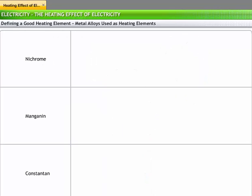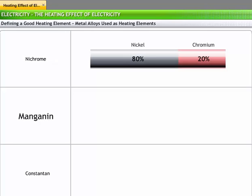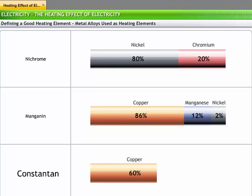Three metal alloys most commonly used as heating elements are Nichrome, an alloy composed of 80% nickel and 20% chromium; Manganine, which is 86% copper, 12% manganese and 2% nickel; and Constantin, a copper nickel alloy with 60% copper and 40% nickel.